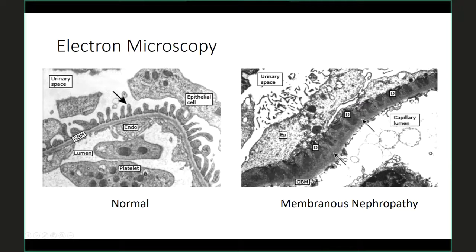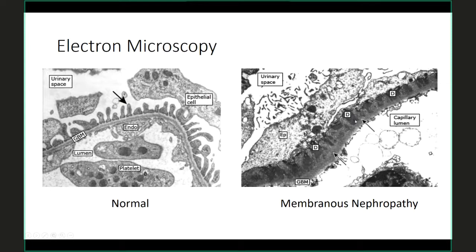In contrast, here's another image oriented similarly — urinary space over here, capillary lumen over there. Unlike the normal image where the GBM is really nice and continuous and all looks the same, this one has these dark dense areas — deposits — things that shouldn't be here. We've got normal glomerular basement membrane but also these deposits inside it, and the foot processes have really no nice organization like in the normal image. You can see the epithelial cell spread out, which definitely looks abnormal. It's these deposits that we're going to focus on.